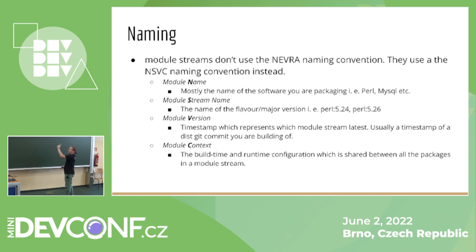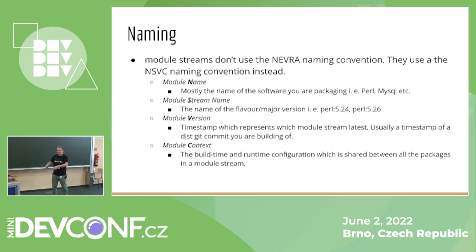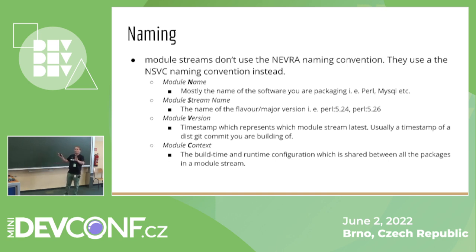For example, you have Perl 5.24 and Perl 5.26. In Fedora you can use only one of those — you cannot use both 5.24 and 5.26 because the system needs to know which one to use. So you choose to enable a stream, say Perl 5.24, and it will mask all the non-modular content related to Perl and use only the RPMs from that stream.